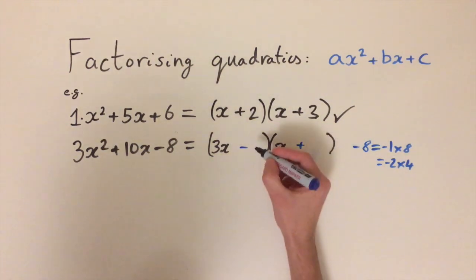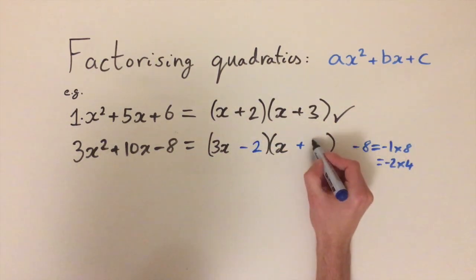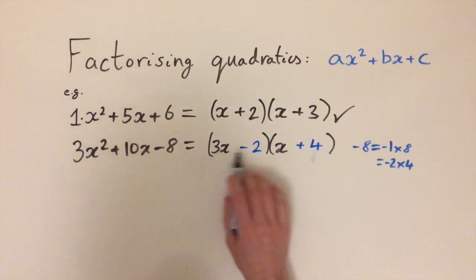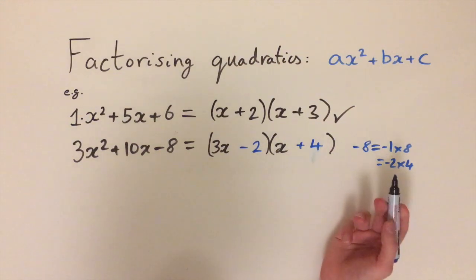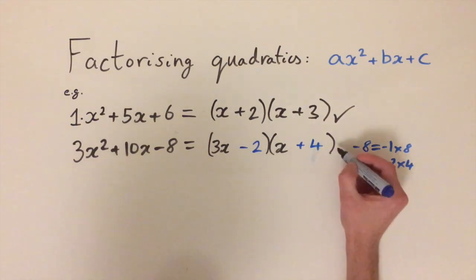How about minus 2 and plus 4. If we multiply this out we'll get 3x times 4 which is 12, and minus 2 times x which is minus 2. So 12 minus 2 equals 10x. So this is the factorized form that we want.